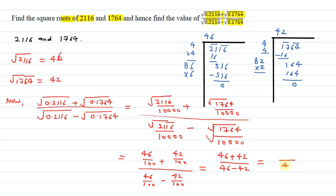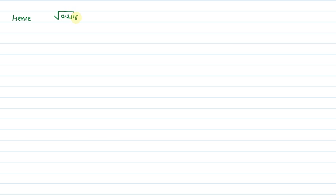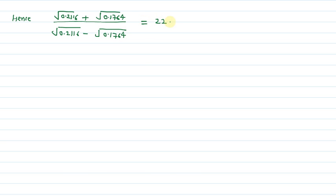In the denominator we are left with 4, and in the numerator 46 plus 42 gives us 88. Dividing 88 by 4 gives us 22. Hence, the value of square root of 0.2116 plus square root of 0.1764 upon square root of 0.2116 minus square root of 0.1764 is equal to 22. I hope you understood the explanation. Thank you.